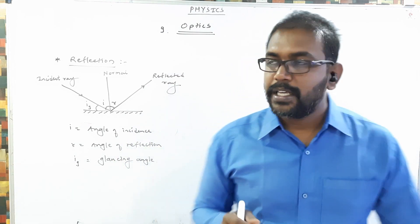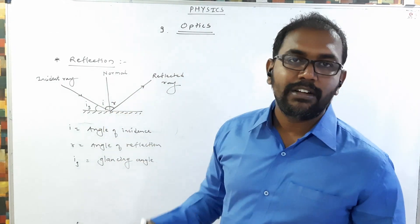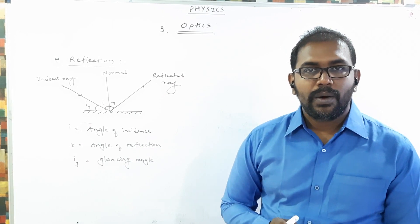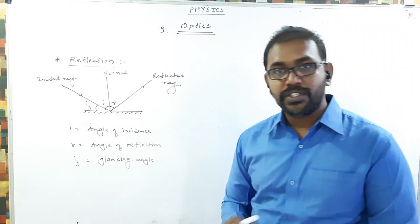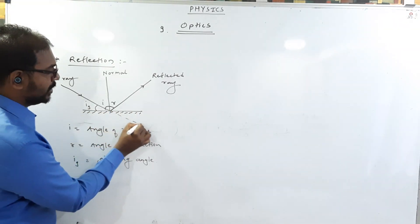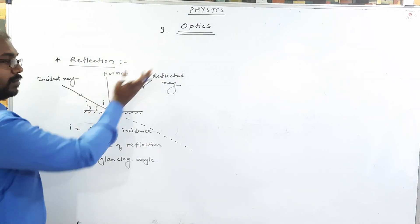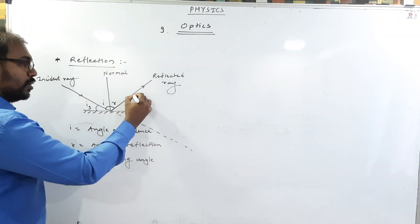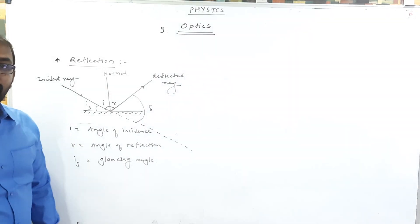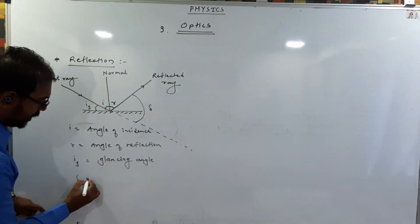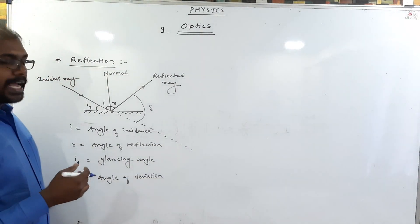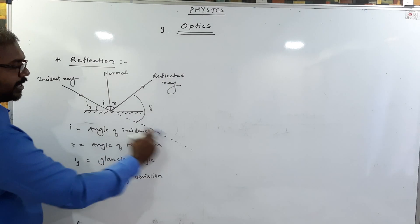This is the glancing angle of incidence. So we have: incident ray, normal, reflected ray, and angle of incidence. Now the question is: when light is reflected from a mirror, what is the angle of deviation? Deviation means — if the mirror were not there, the light ray would go straight. But because of the mirror it is reflected and moves in a different direction. So this angle is the angle of deviation — the light ray is deviated by this angle because of the mirror.